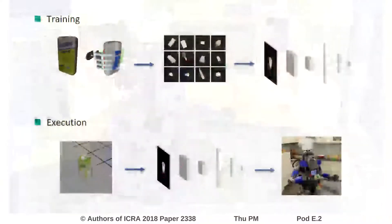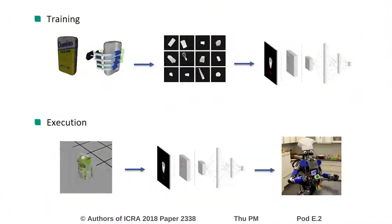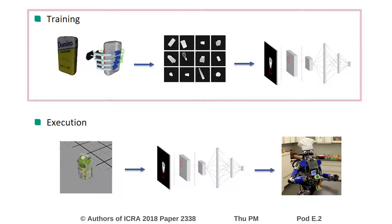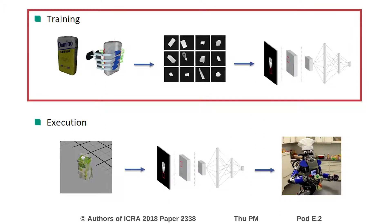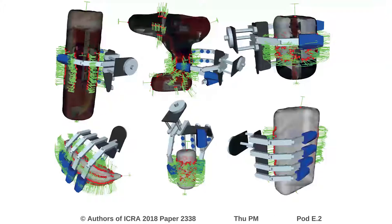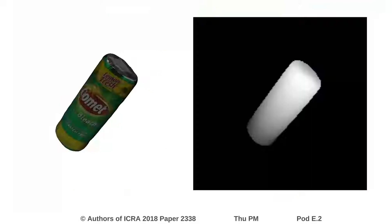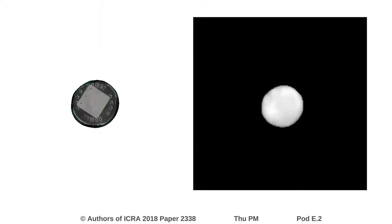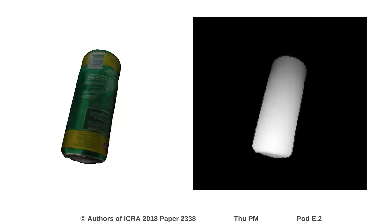For the first step of our approach, we generate training data by combining grasping databases of 3D objects with classic existing grasp planners, and train a deep convolutional neural network. For each object in the dataset, we generate a list of grasps using external grasp planners. We then render many samples per object by applying random rotations and translations.